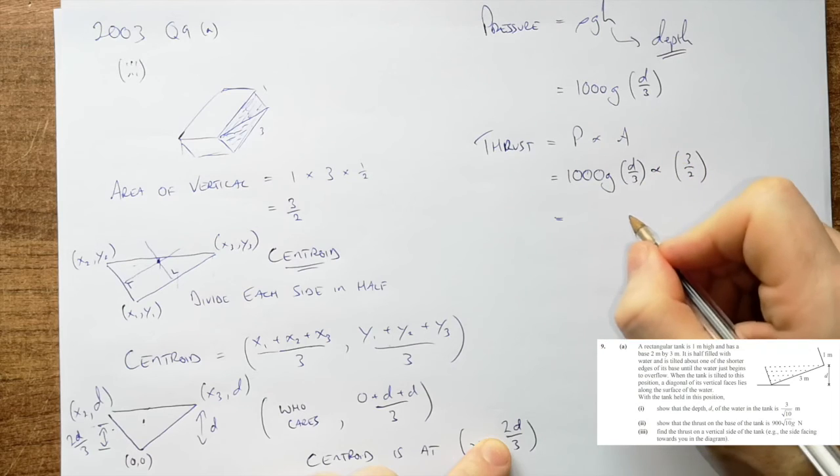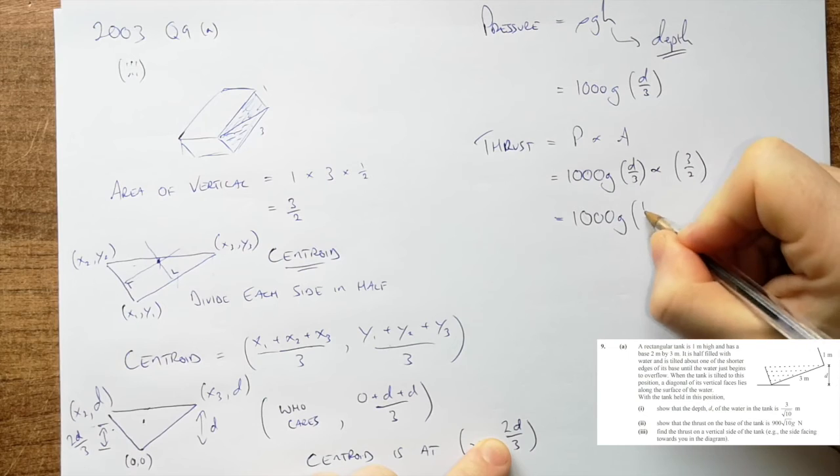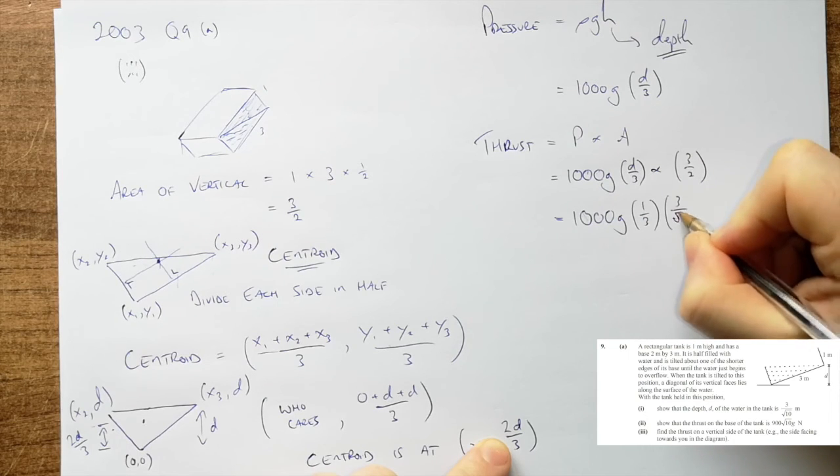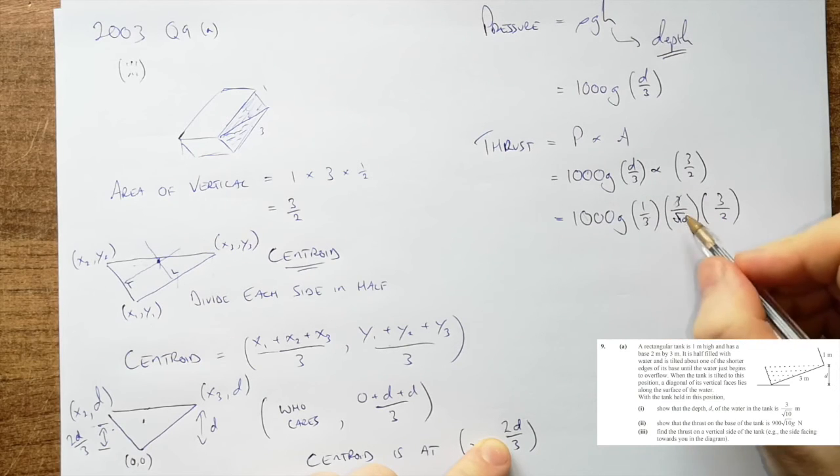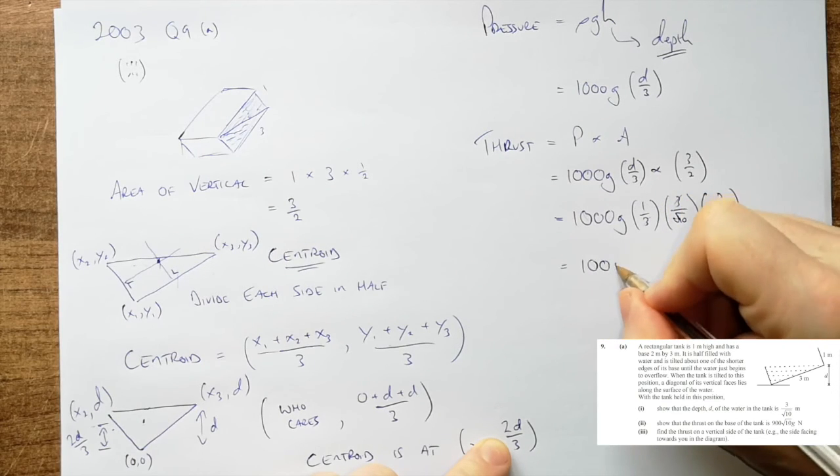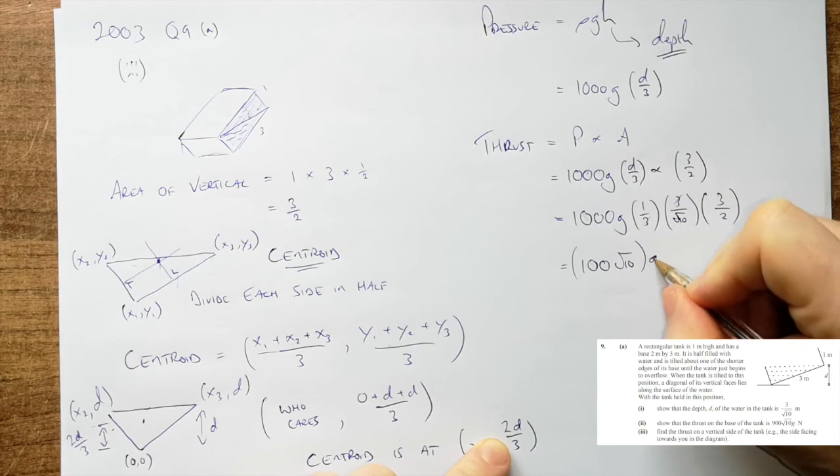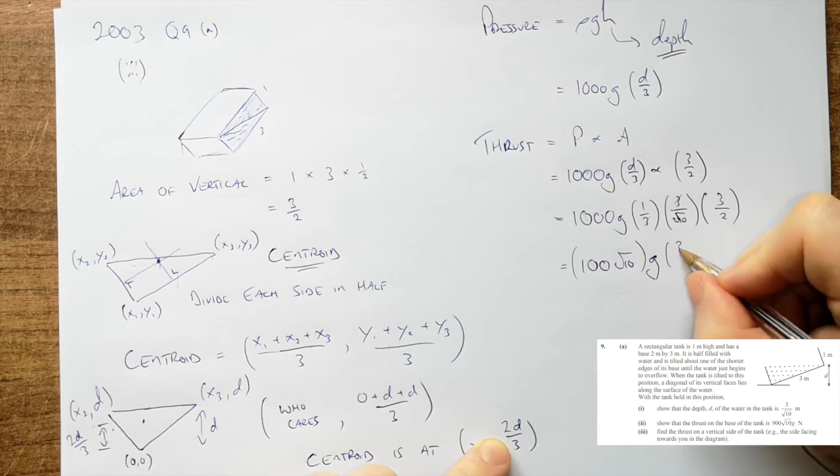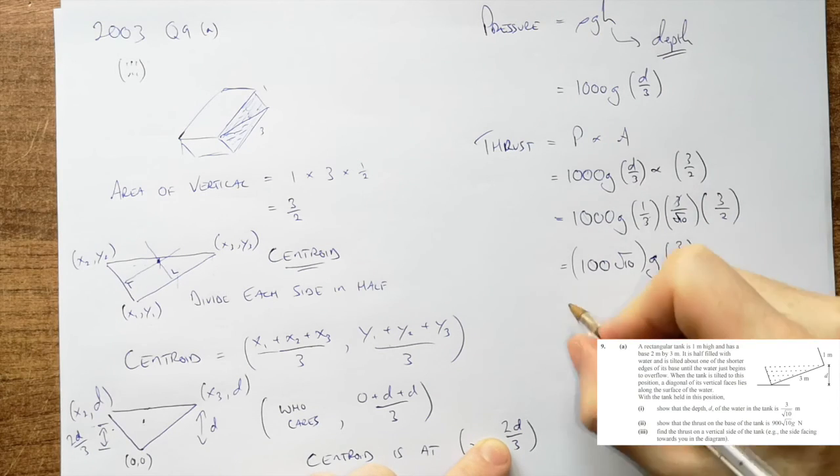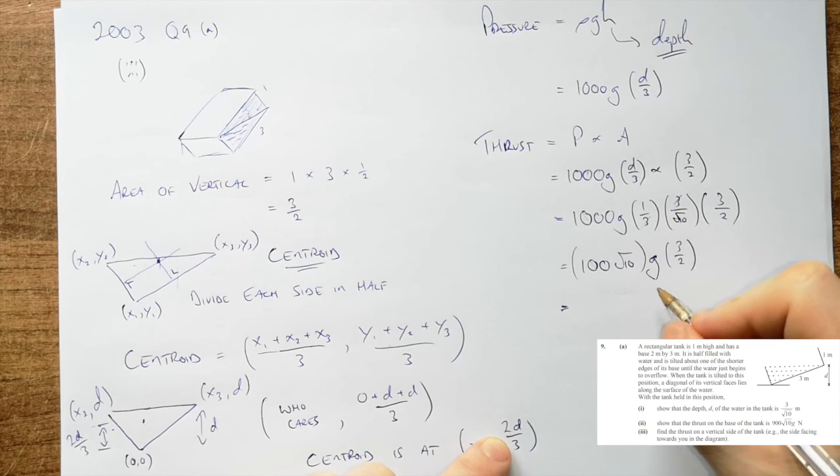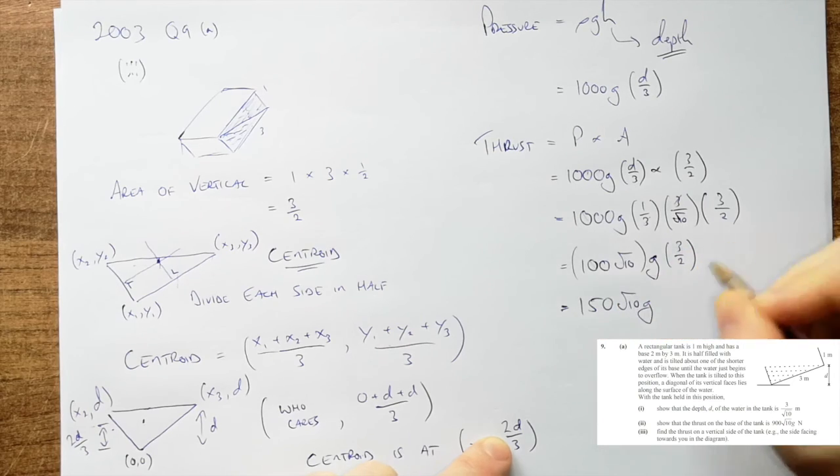Let's begin to figure all this out. 1000 g by 1 over 3 by 3 over root 10 by 3 over 2. Cancel those guys and we end up with 100 root 10, 1000. Bring the root 10 up into this, by g. That goes to 1 by 3 over 2. So let's see what we're going to get here. 3 over 2 is 1.5, so that is 150 root 10 g. And again we'll stick it into numbers.